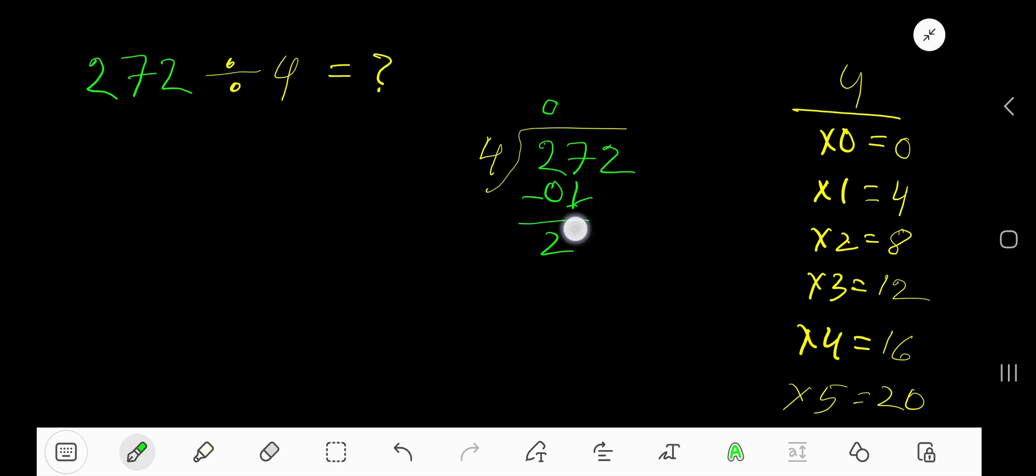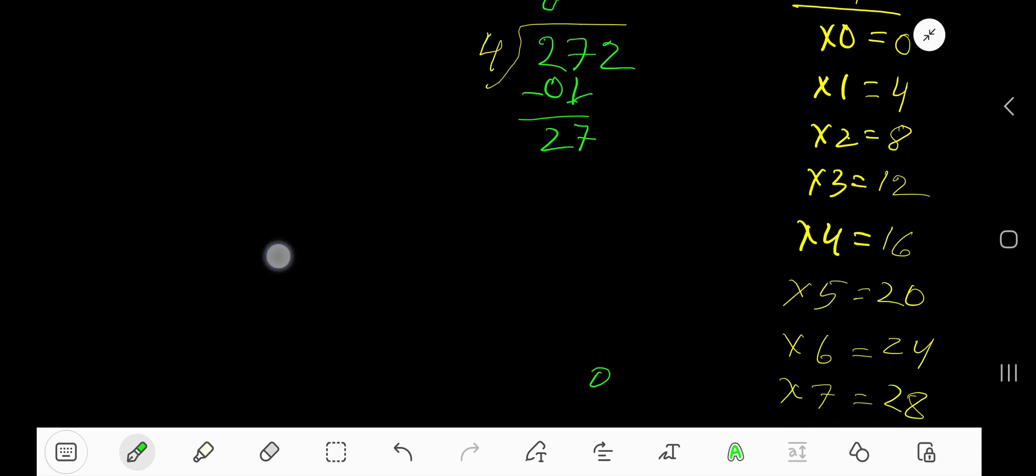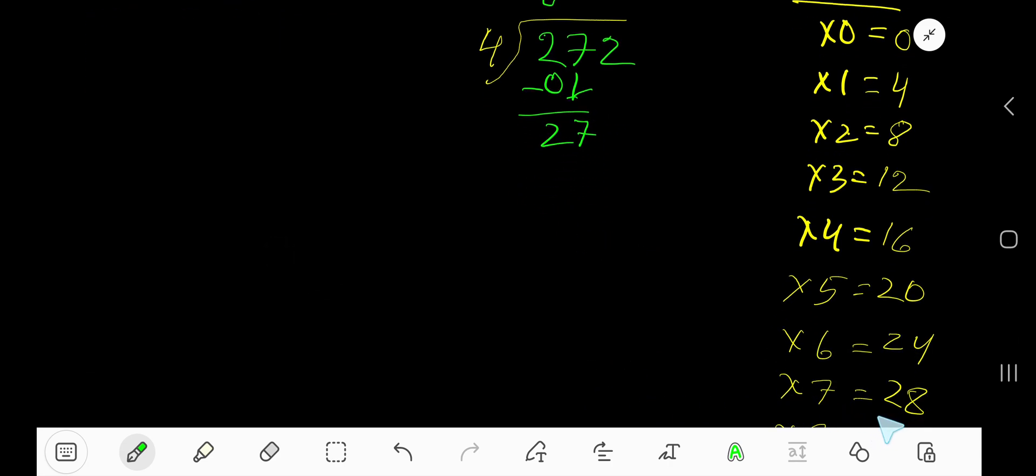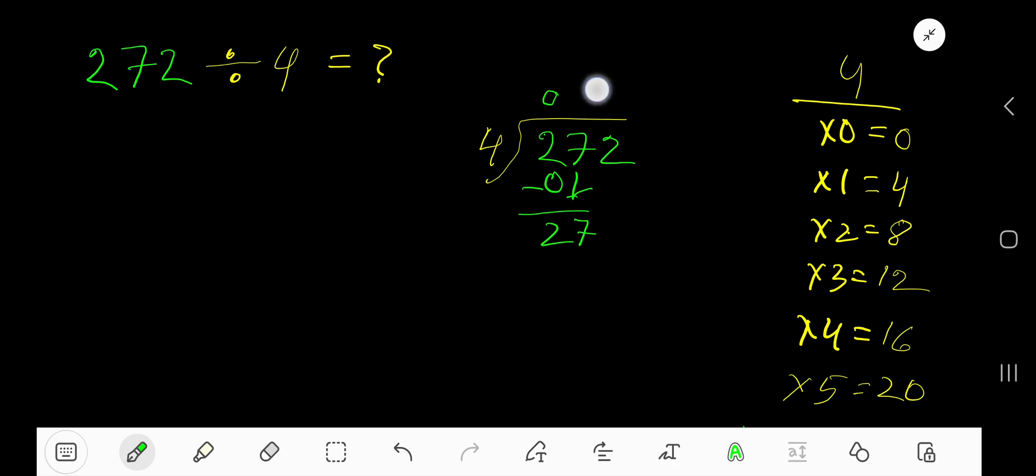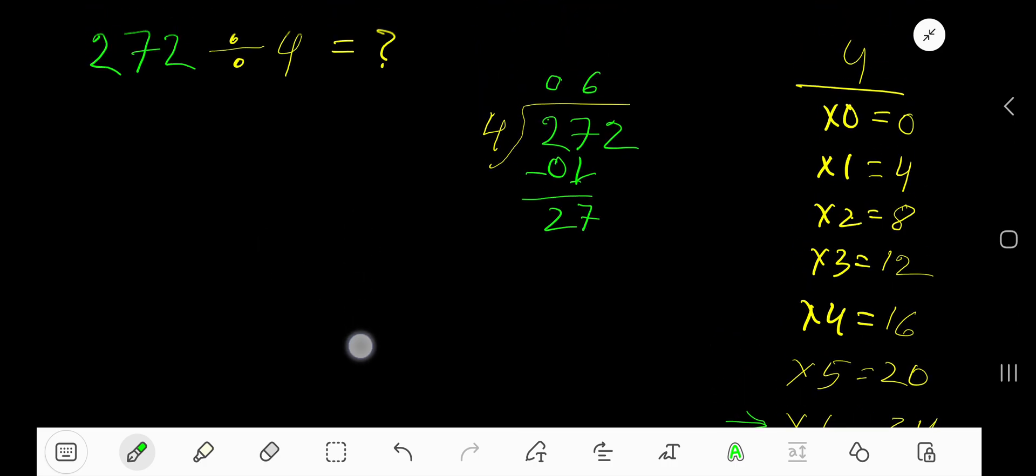Bring down this 7. 4 goes into 27 how many times? 7 times 4 is 28, which is greater, so 6 times. Write 6. 6 times 4 is 24.